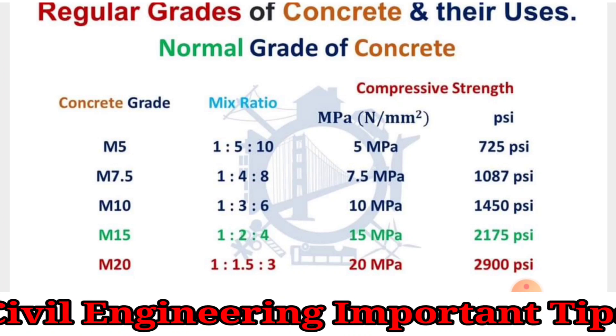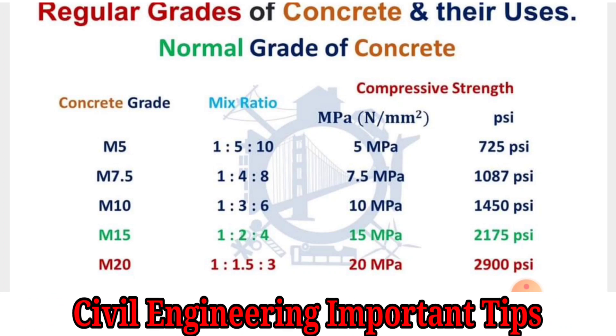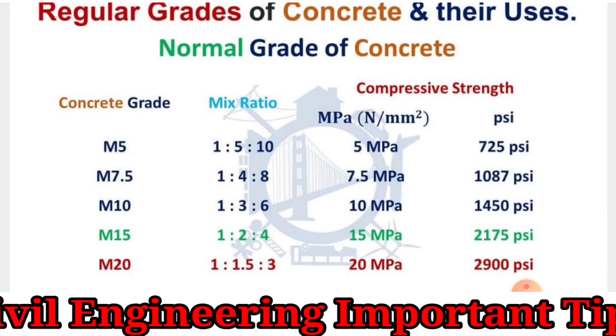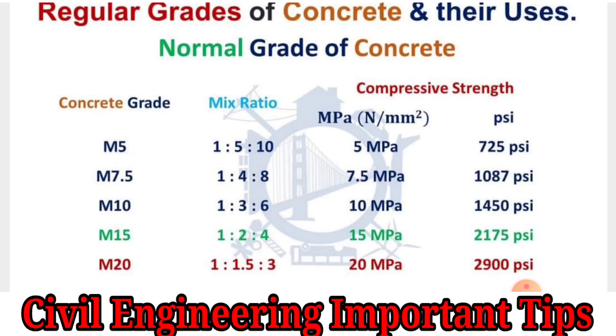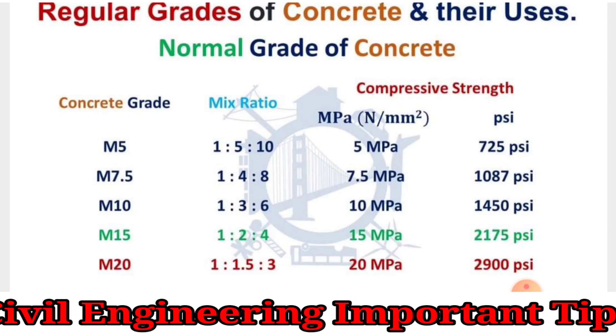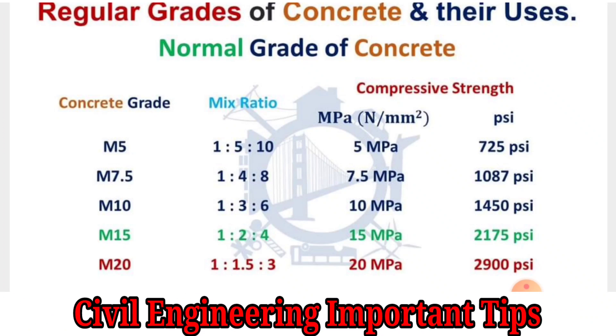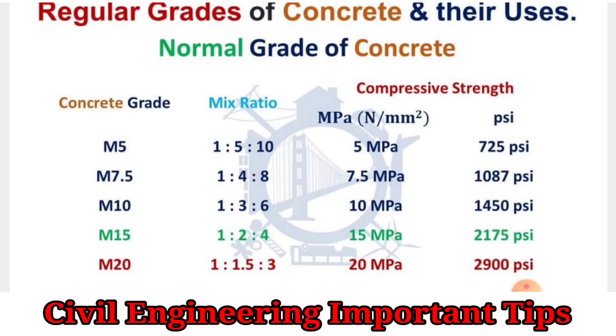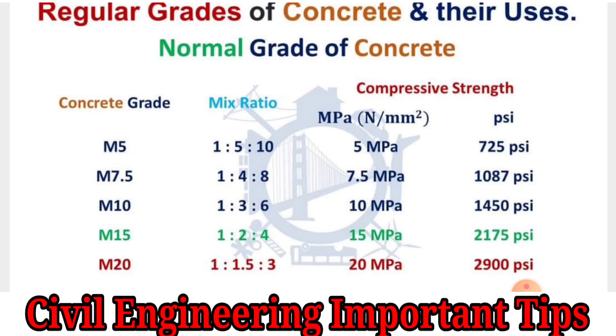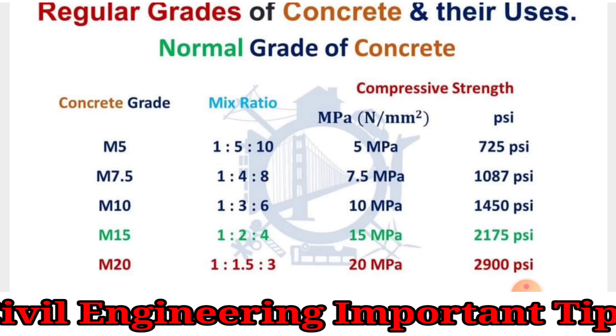For M7.5, the CSA — Cement Sand Aggregate ratio — is 1:4:8, and its compressive strength in 28 days is 7.5 MPa.